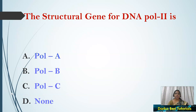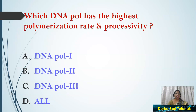The structural gene for DNA Pol 2 is pol B gene. The structural gene for DNA Pol 3 is pol C gene.